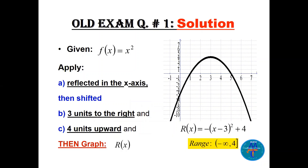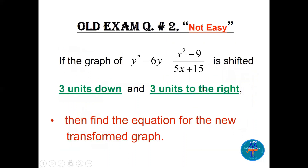We have f(x) = x², that's a parabola. Reflected in the x-axis it becomes negative outside. Shifted to the right three units, there is an (x − 3)², because we have the same function f as a parabola. Four units upward, there is a plus four. We graph it — the parabola at zero, reflected, shifted right and upward. The range will be (−∞, 4].